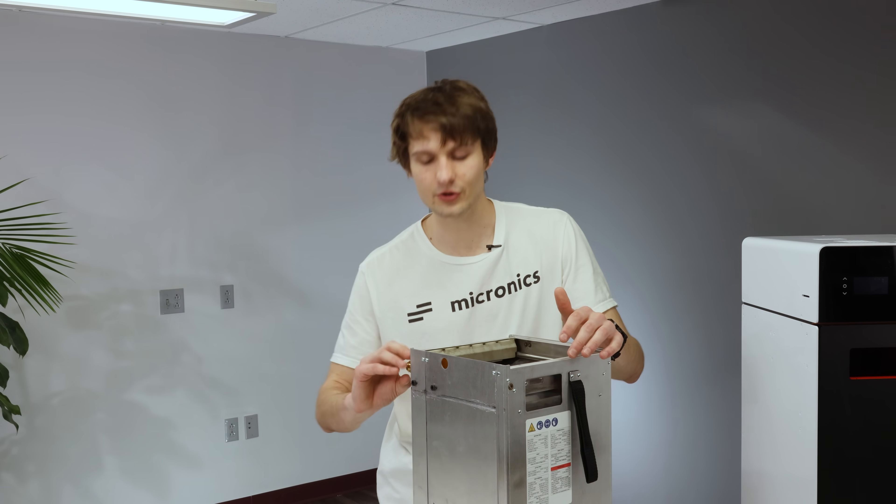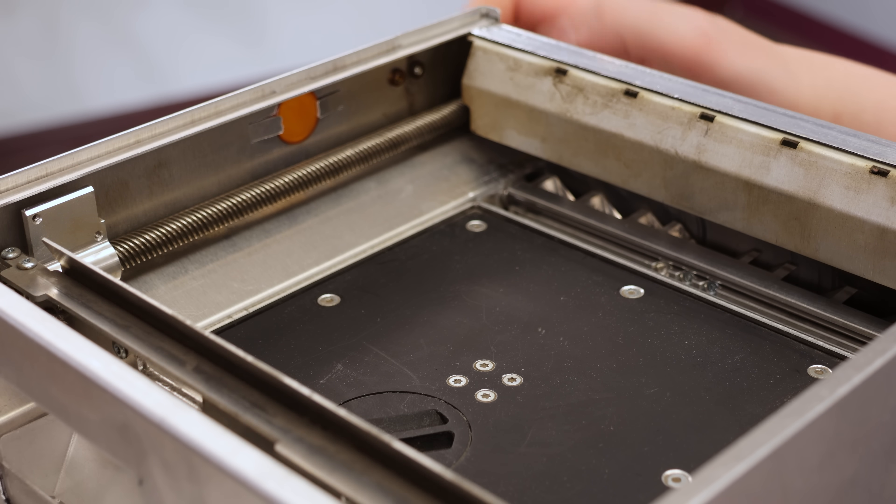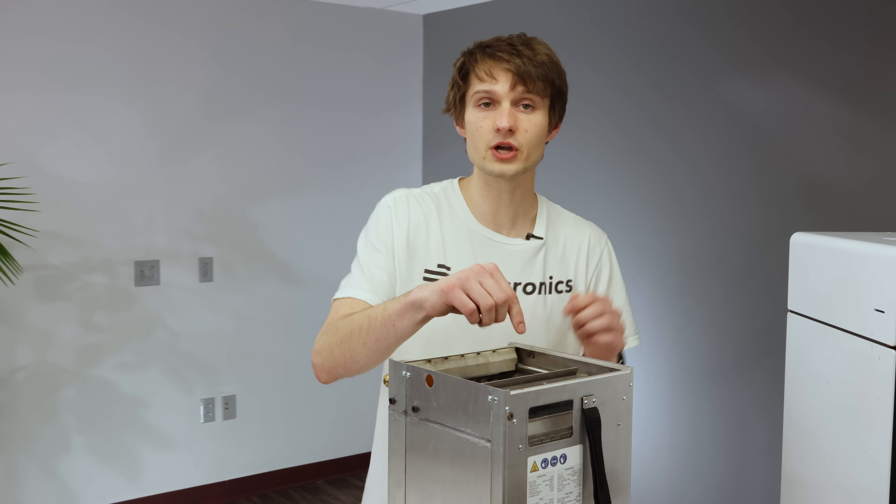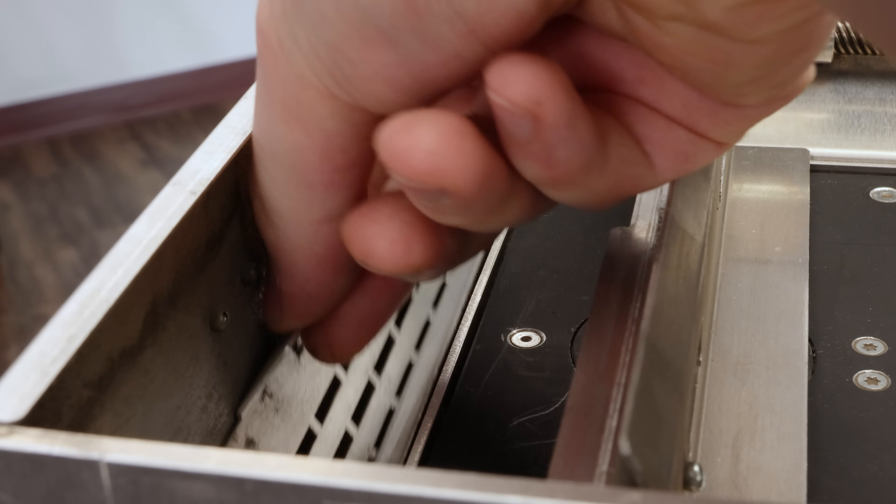Now, we'll give the recoater lead screw a gentle twist. You should feel very little resistance. With the recoater slightly back, we can now install the overflow filter, ensuring the little tab is at the front.